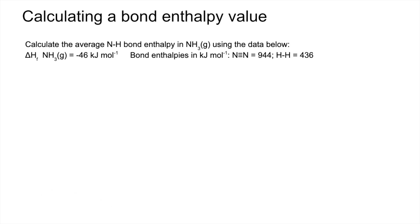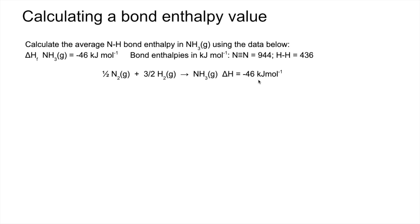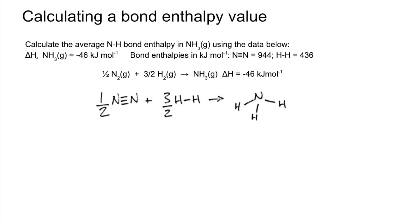For this one we're given the delta H of formation for ammonia. The equation representing that must make 1 mole of ammonia from the elements in their standard states, so we need half a mole of N2 and 1.5 moles of H2. The enthalpy change for that reaction is minus 46 kilojoules per mole. Displaying the bonds, the energy in for bonds broken is 0.5 times 944 for the N≡N bond plus 1.5 times 436 for the H-H bond.